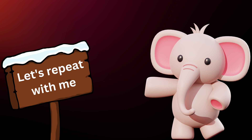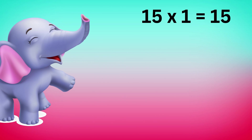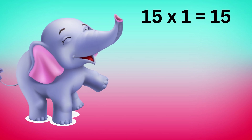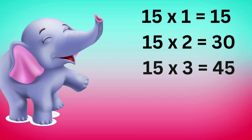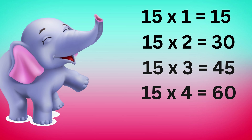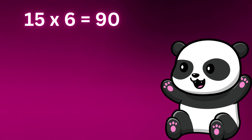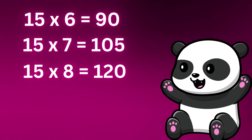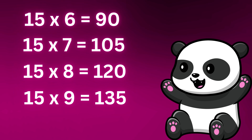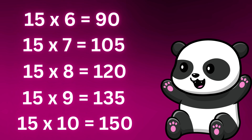Let's repeat with me: fifteen ones are fifteen, fifteen twos are thirty, fifteen threes are forty-five, fifteen fours are sixty, fifteen fives are seventy-five, fifteen sixes are ninety, fifteen sevens are one hundred five, fifteen eights are one hundred twenty, fifteen nines are one hundred thirty-five, fifteen tens are one hundred fifty.